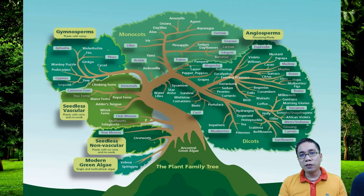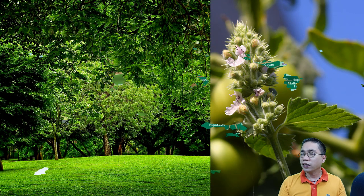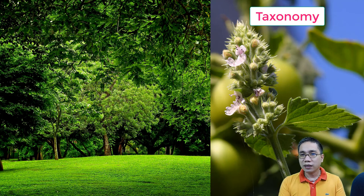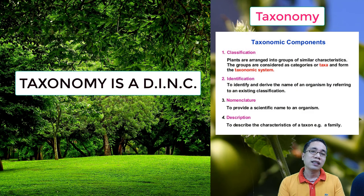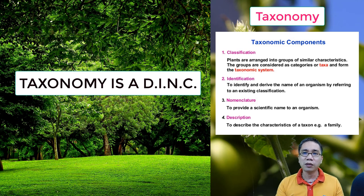So, that's enough for now for evolution. Let's now look at taxonomy as another component of plant systematics. For taxonomy, you remember the DINC — D-I-N-C. This stands for description, identification, nomenclature, and classification. It's totally self-explanatory.